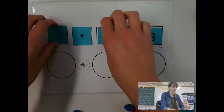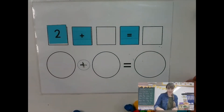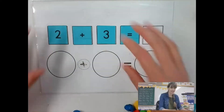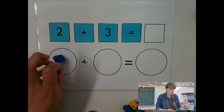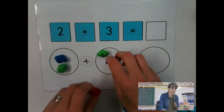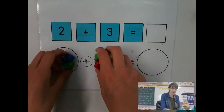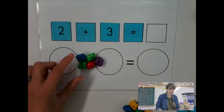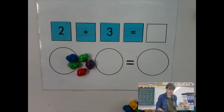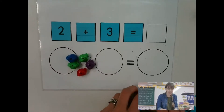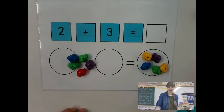Let's try another problem — let's try two and three. Can you put those on your mats? Can you find those numbers? Now let's start counting. I have two for one group and three for my other group. I'm adding them together, putting them together. How many do I have all together? Two, three, four, five. So two plus three equals five.